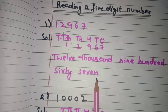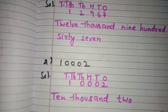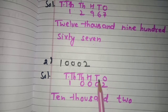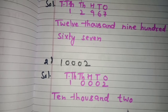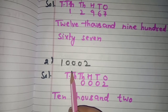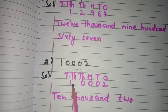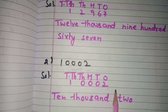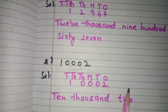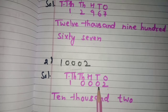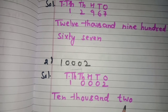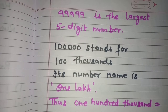Let us take one more example: 10,002. We write the number and mention the places above it. The digits 1 and 0 are under the thousands period, so we say ten thousand. At hundreds and tens places we have zeros, and at ones place we have 2. Since there is nothing at the tens place, the digit at ones place is read separately, so it is two. The number is ten thousand two.